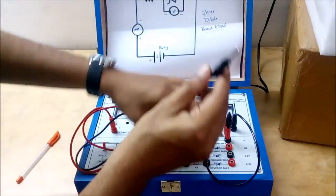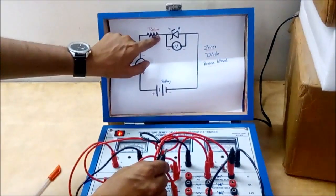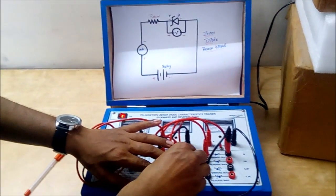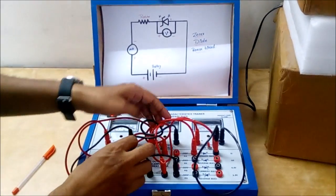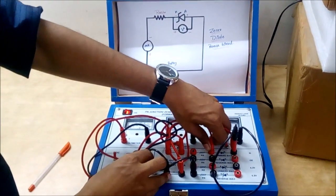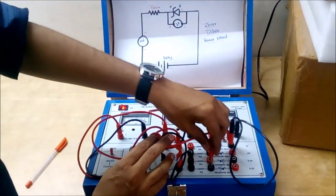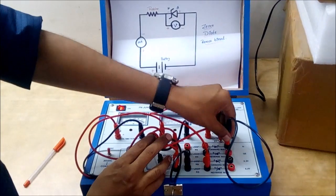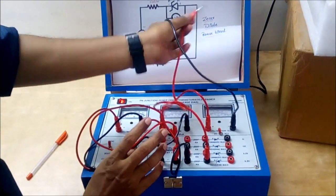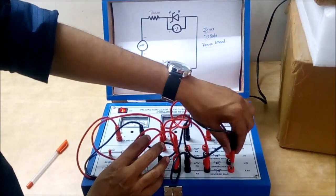That is this connection of the resistor is going to the negative end of the terminal of the diode. Similarly, here we are taking the voltmeter, the positive end of the voltmeter is going to the cathode.